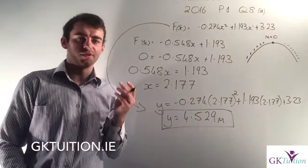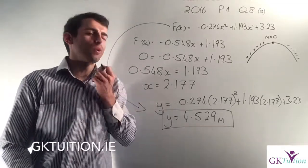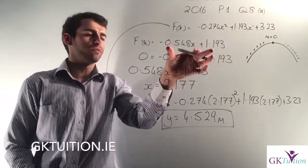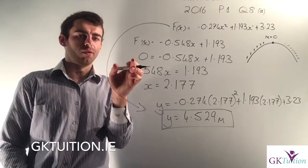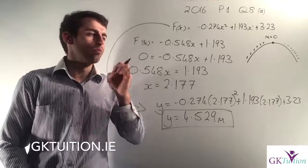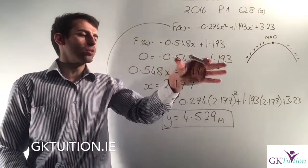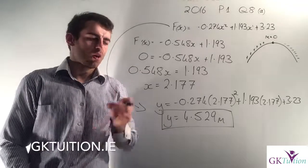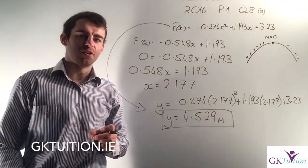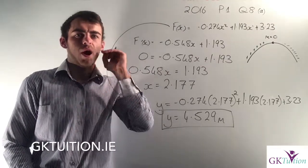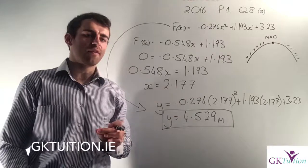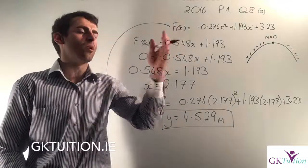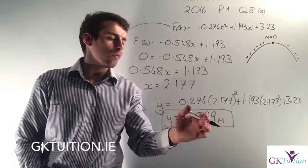That's a very typical differentiation question. To identify where a maximum point exists on the graph, I get my first derivative — in other words my slope — and I let my slope equal to 0, because when the slope is 0 there must be a turning point. Once I do that I identify that the slope is 0 when x is 2.177, and subbing that into the original function gives the maximum height of 4.529 metres.